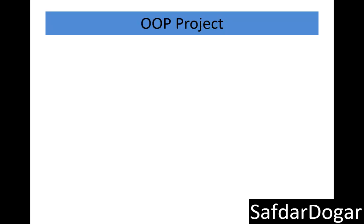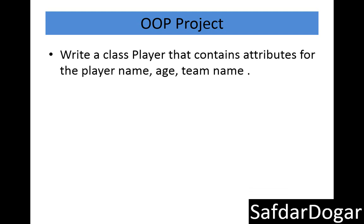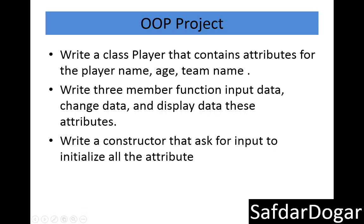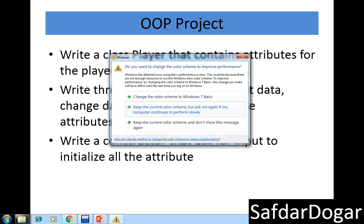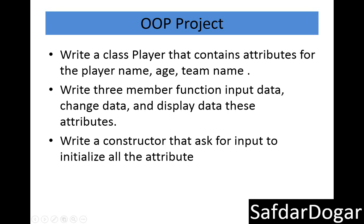In today's lecture we will learn a small project. We will write a class called Player that contains 3 attributes: name, age, and team name. The class name will be Player. We will write 3 member functions: input data, change data, and display data. We will also write a constructor that asks for input to initialize all these attributes.